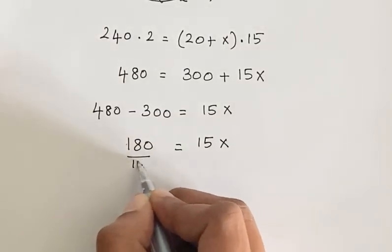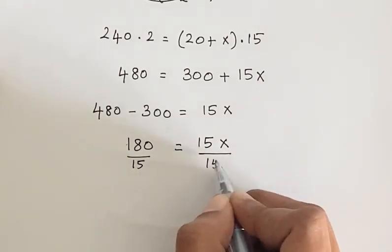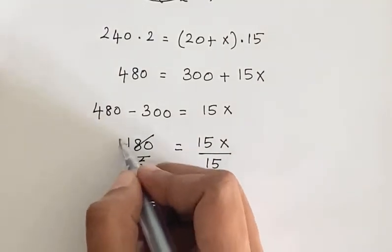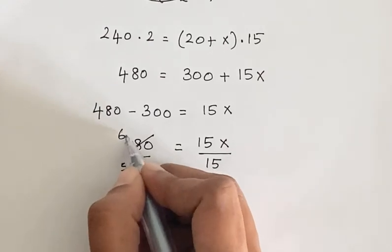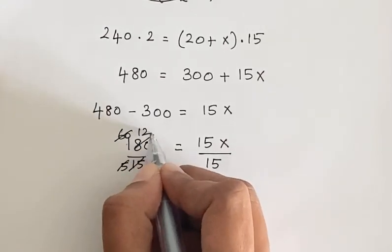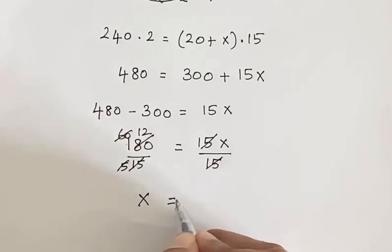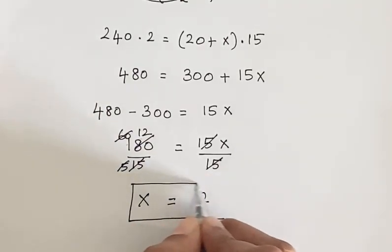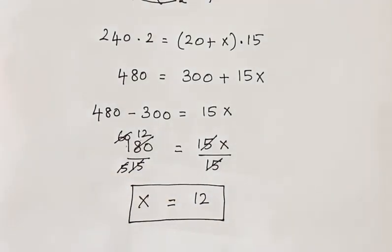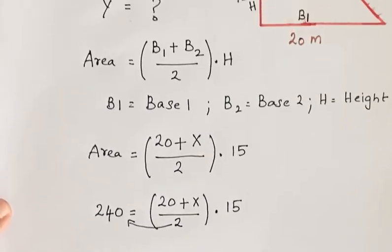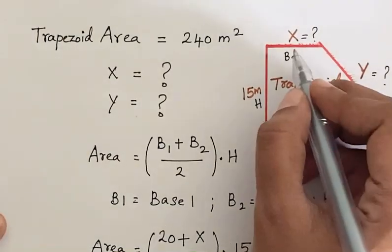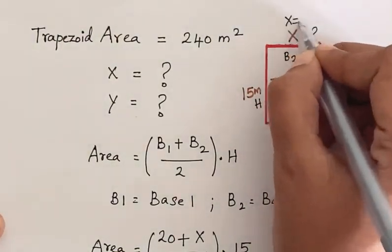Now divide both sides by 15. Let us cancel out, so we get x equals 12. So we get the value of x is 12. We have found the base 2 length of the given trapezoid, that is x equals 12.